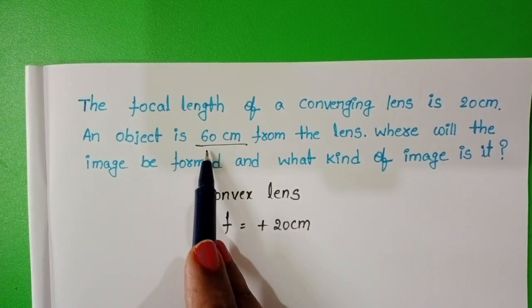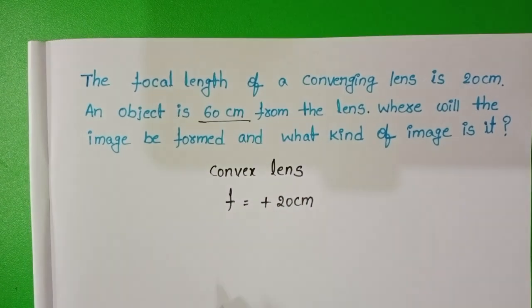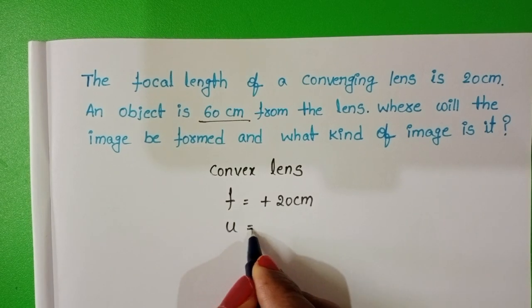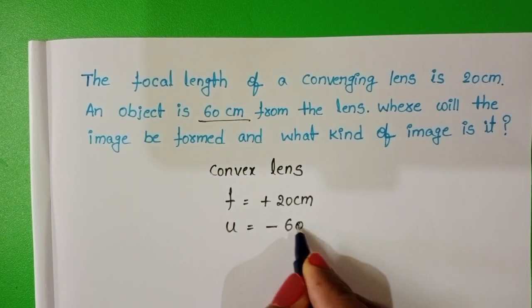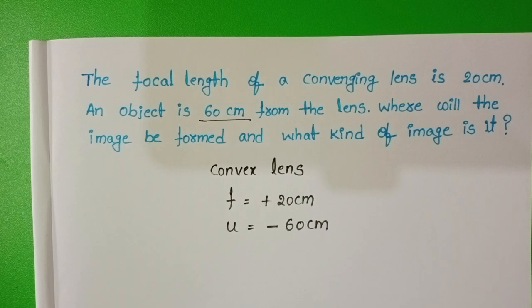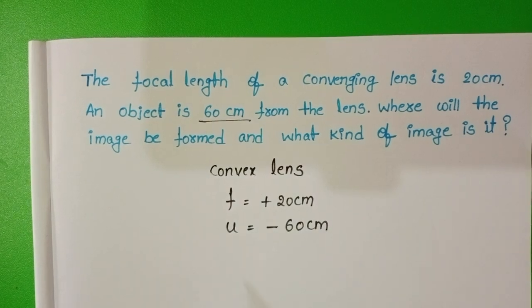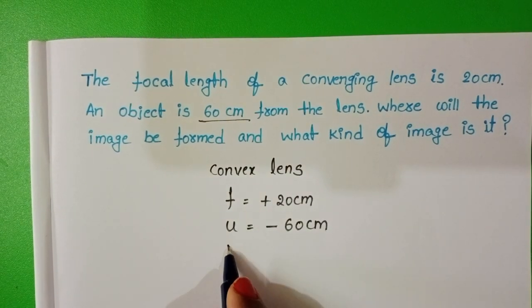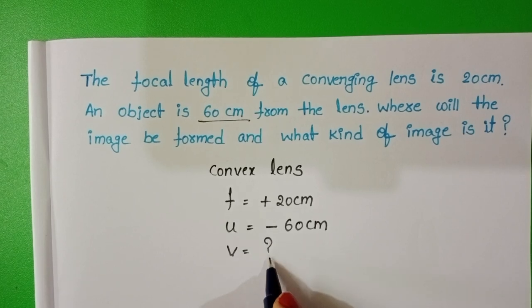Object distance is 60 cm. We know object distance is always negative, so U equals minus 60 cm. We have to find out the image distance and nature of the image.